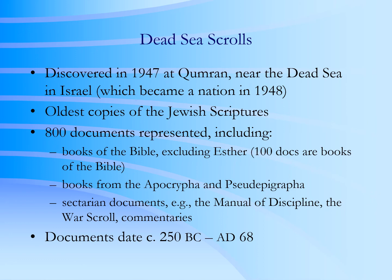The Dead Sea Scrolls were discovered just after World War II — an extremely significant find, considered one of the greatest of all archaeological discoveries. One of the most significant things about the Dead Sea Scrolls is that they took our knowledge of the Hebrew Bible, as far as extent copies, back a thousand years or so before the earliest manuscript we already had of the Hebrew Bible, and thus demonstrated that the Hebrew Bible, over a very long period of time, changed very insignificantly — remaining essentially constant over time.